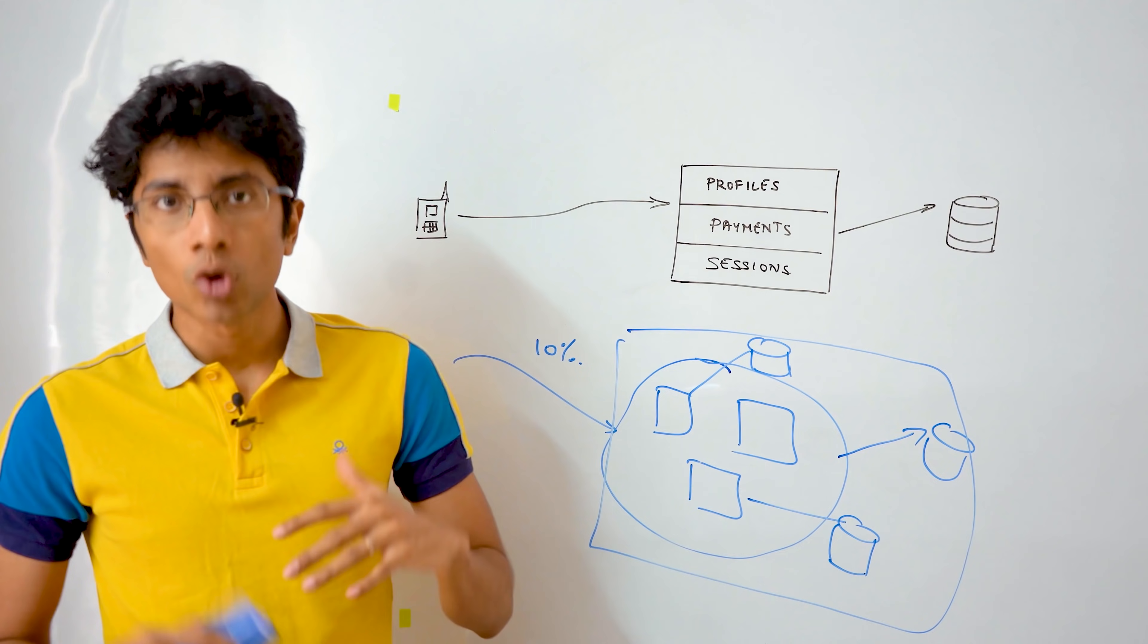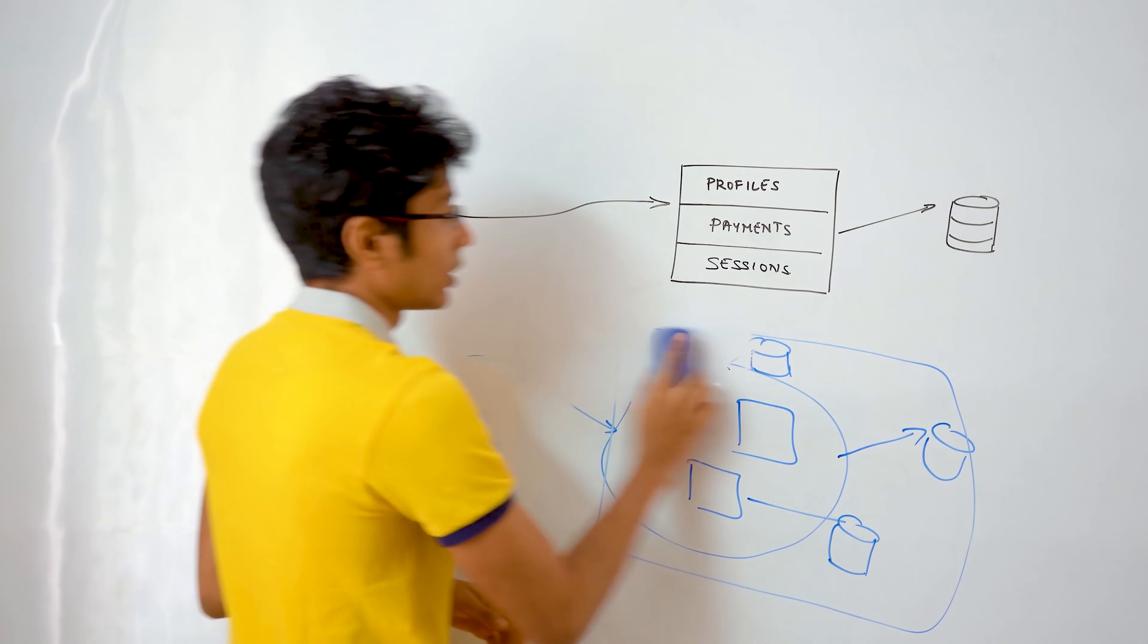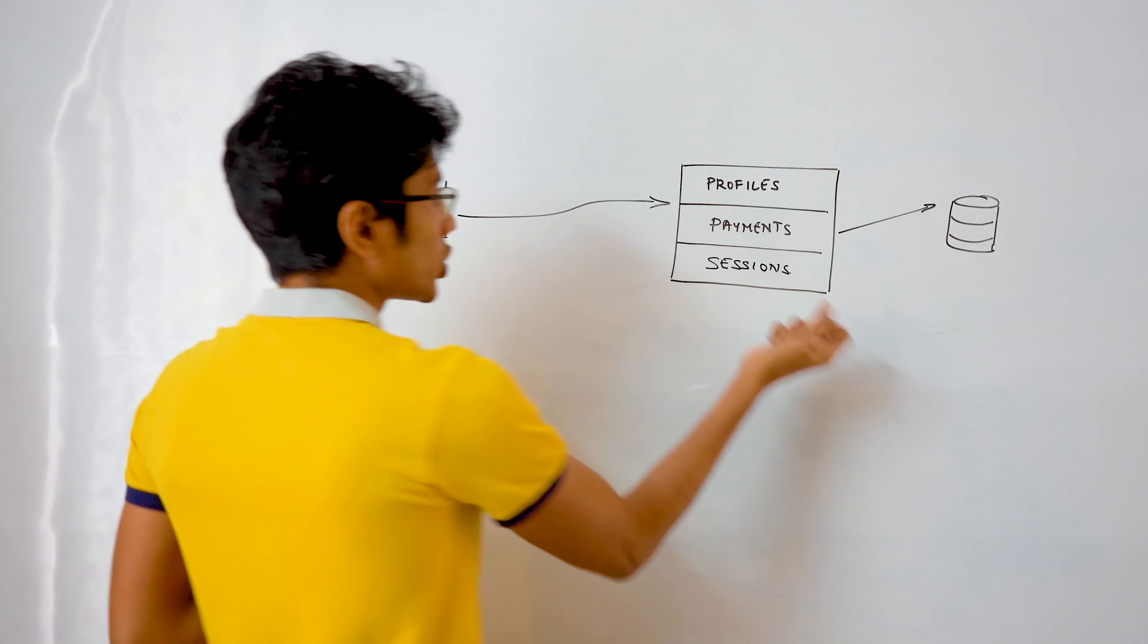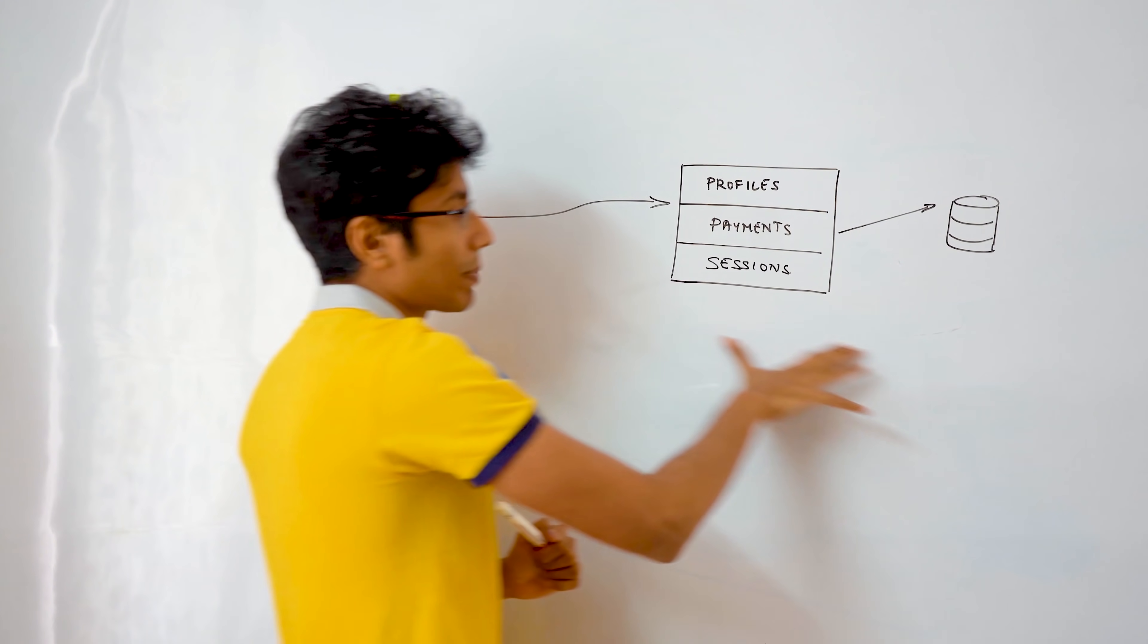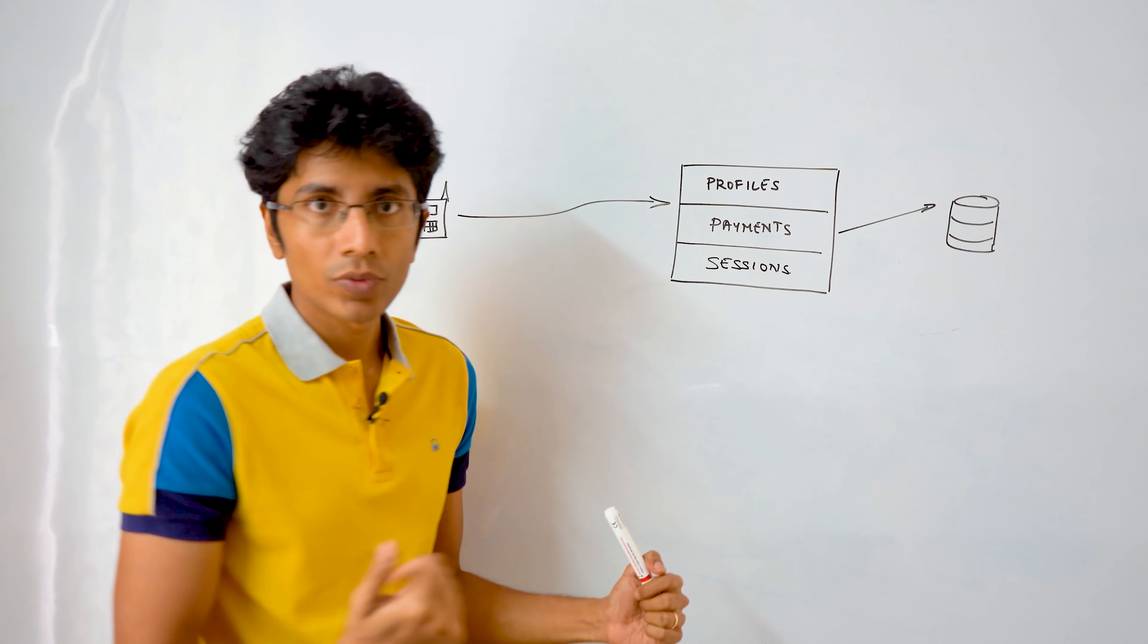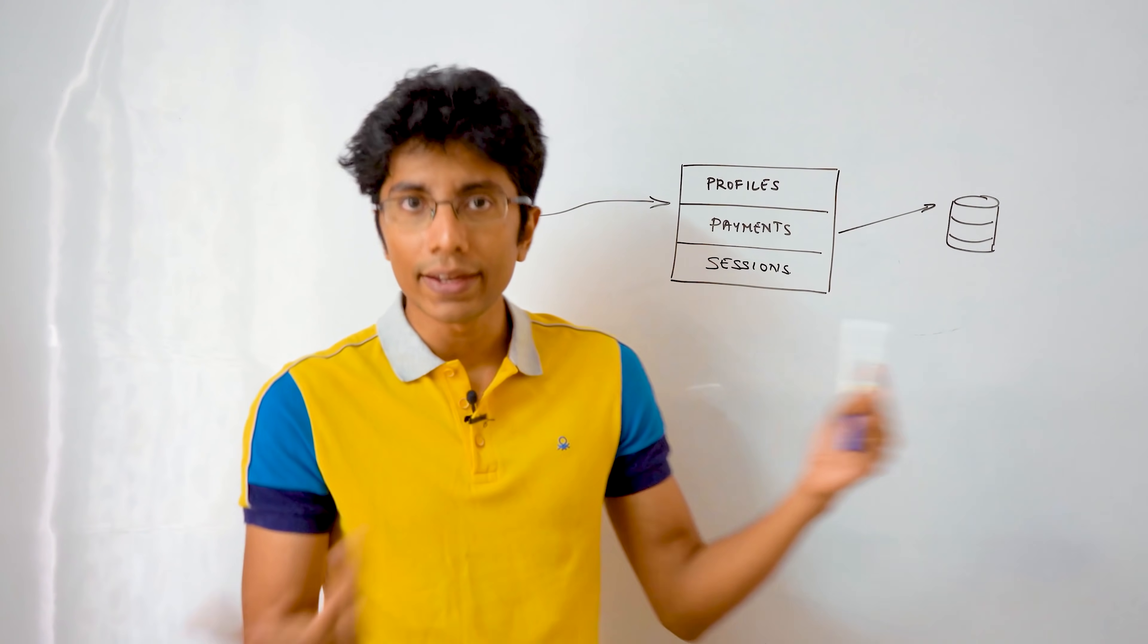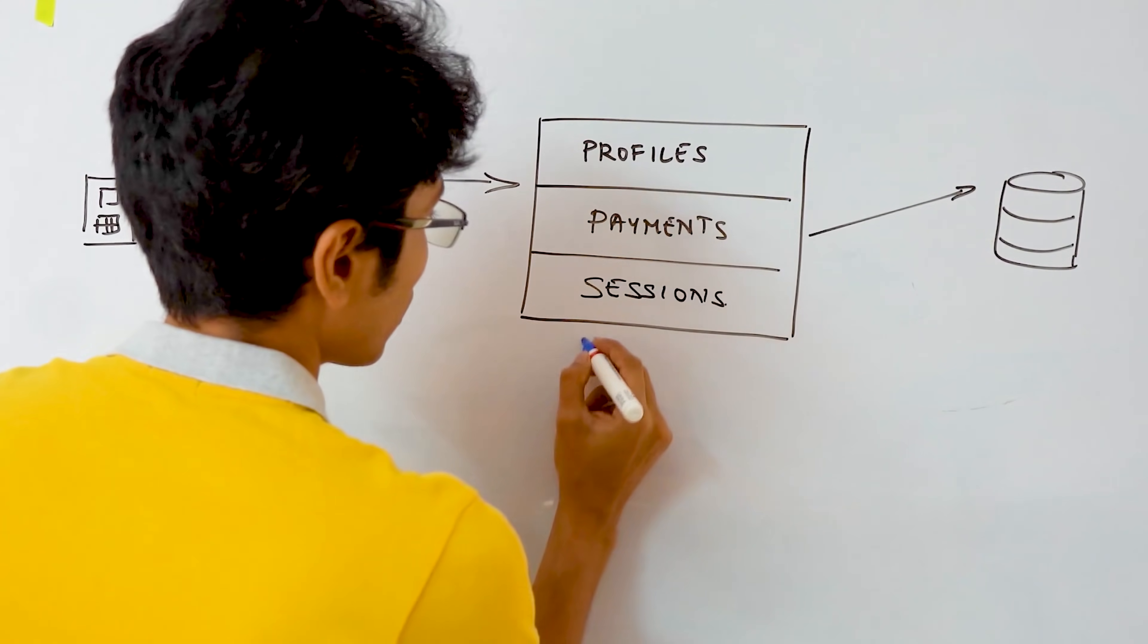A much better approach is not to invest so much in the start. What you can do is when you have a new feature in this monolith architecture, you can try to separate that out into a single service. For example, you might have a new analytics feature that you need.